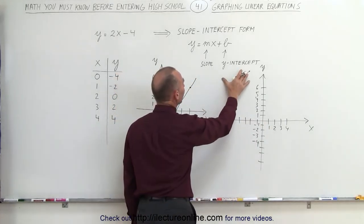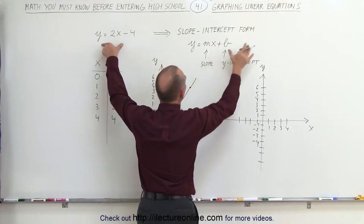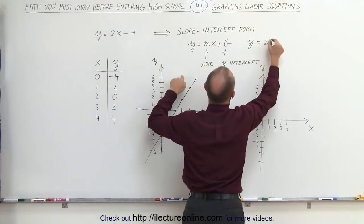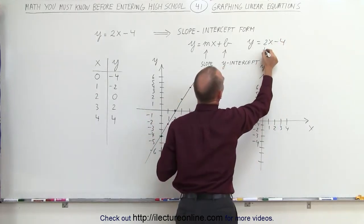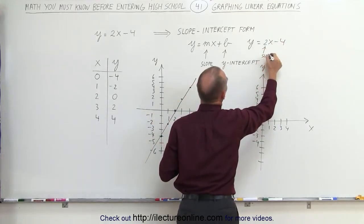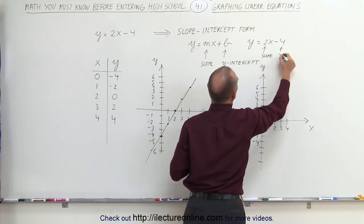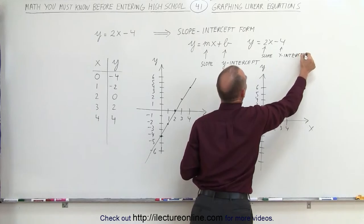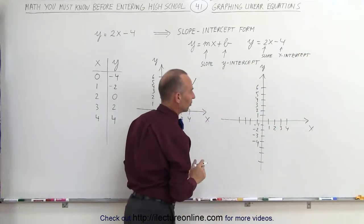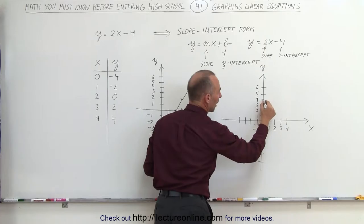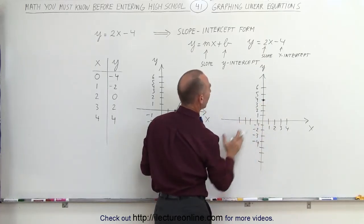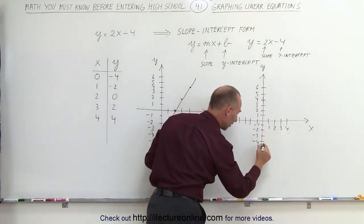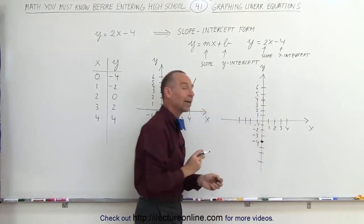What we first do is find the y-intercept. So let me take this equation and put it right next to this one. We have y is equal to 2x minus 4. Notice this here is what we call the slope, and this number here represents the y-intercept. The y-intercept is the point where the graph crosses the y-axis. That means right here when y equals negative 4, that's where the graph... This is where the graph crosses the y-axis. That's what we call the y-intercept.